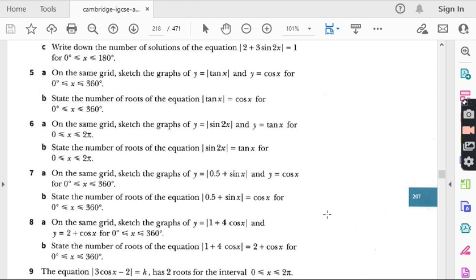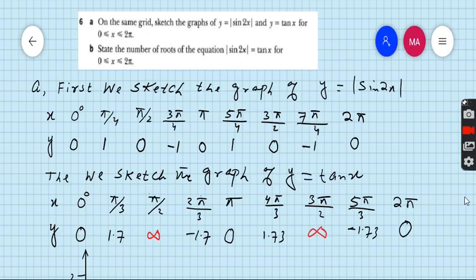Let's start question number six. I did some work for you because graphs questions always takes much more time as compared to other questions. So question number six is on the same grid, sketch the graphs of y equals absolute value sine 2x and y equals tan x for the domain 0 to 2 pi radian. Now radian is not new for you because we have done lots of questions from exercise number 9.4 which are related to radian functions.